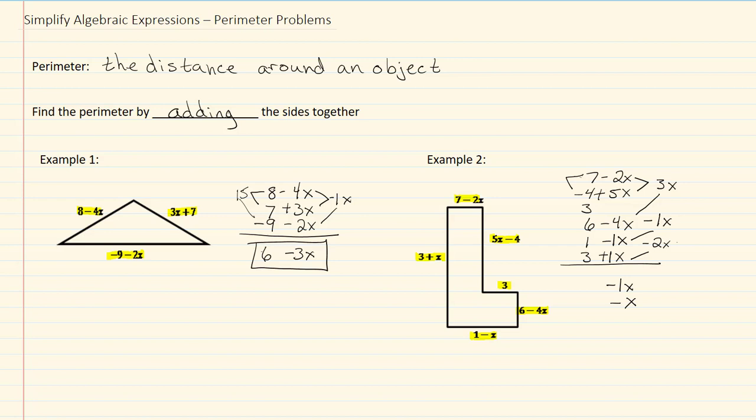Now I have my 7 minus 4 which would give me 3. 3 plus 3 would be 6, 6 plus 6 would be 12, 12 plus 1 would be 13, and 13 plus 3 would be 16. So I have 16 minus 1x or in other words 16 minus x and that would be my perimeter for my L.